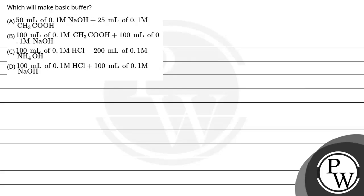Hello, let's look at this question. The question asks which combination will make a basic buffer, and we have 4 options given. The key concept here is buffer — we have two types: one is acidic buffer and the other is basic buffer.